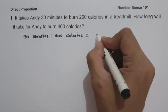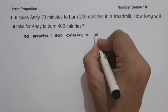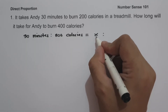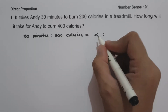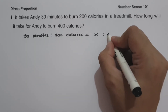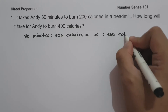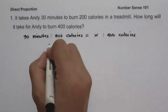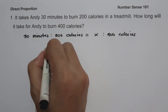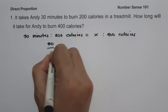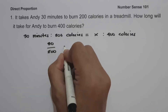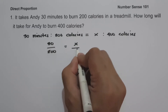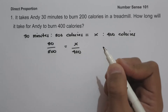On the other side, let us have X — that is the number of minutes that we are looking for in order for Andy to burn 400 calories. So let us write this one as 30 over 200 equals X over 400.